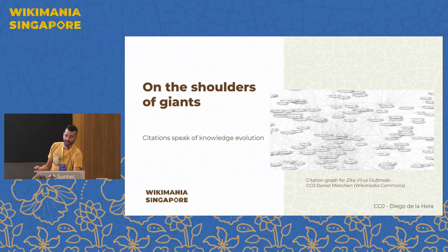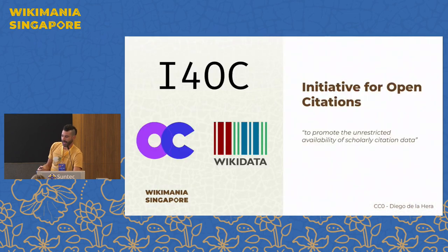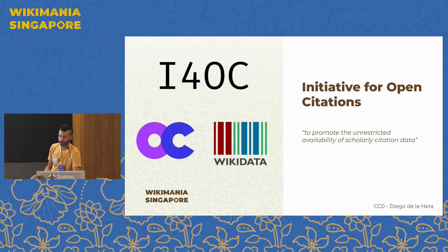This data — what papers cite which papers, what works cite which works — has become increasingly available in the open in recent years, thanks to the effort of the Initiative for Open Citations and the Open Citations project, and much of this information is also available in Wikidata.